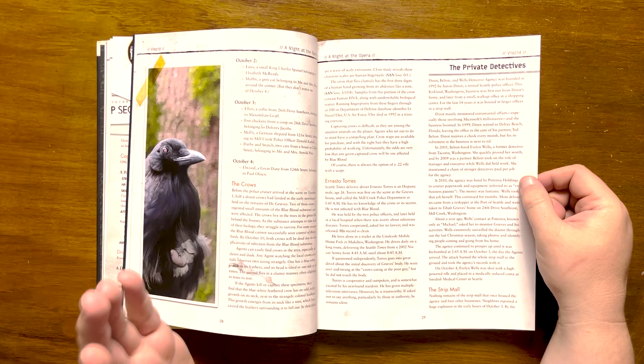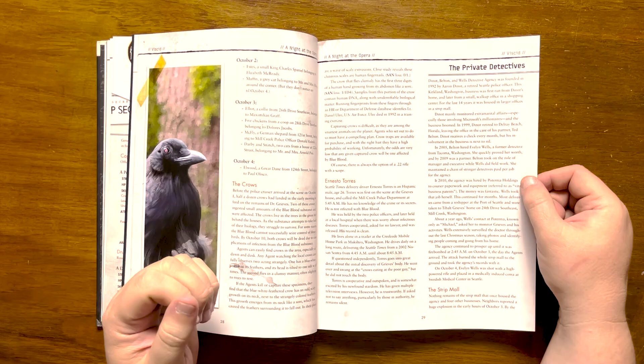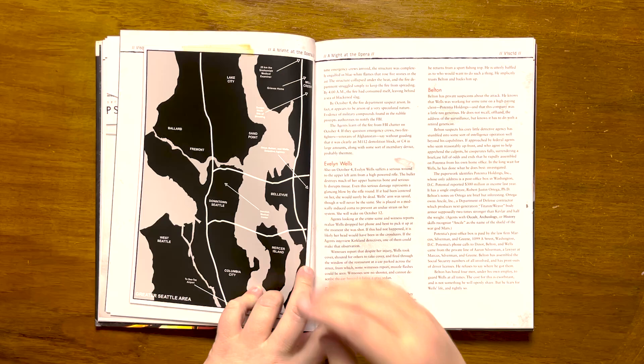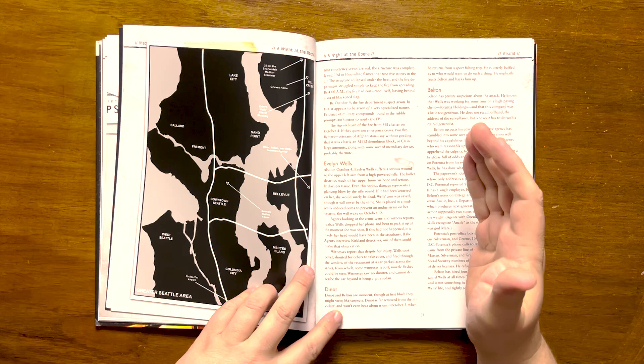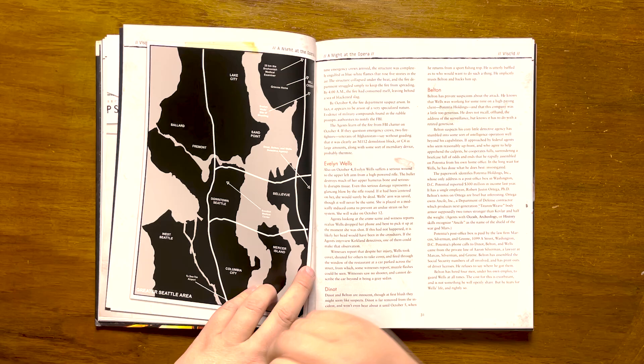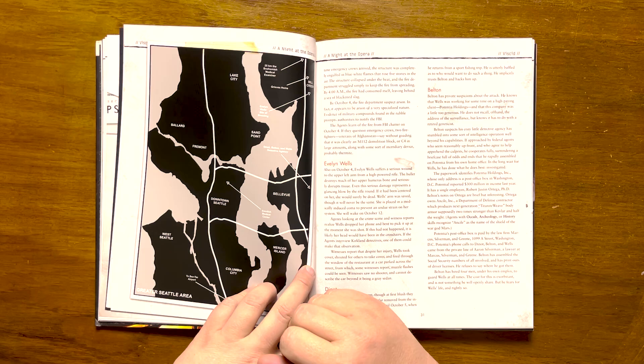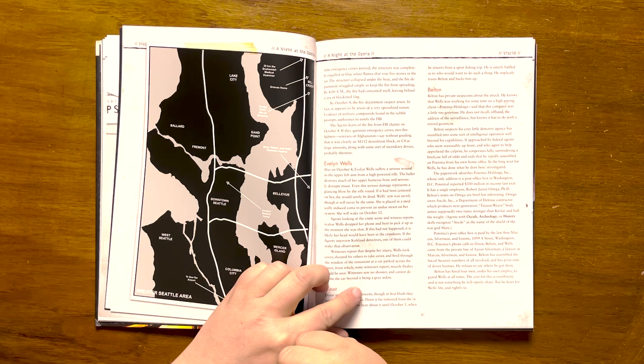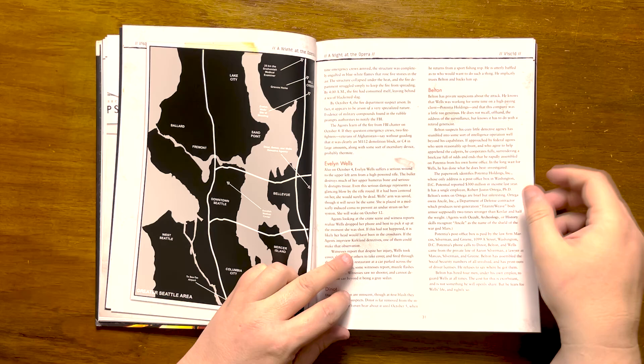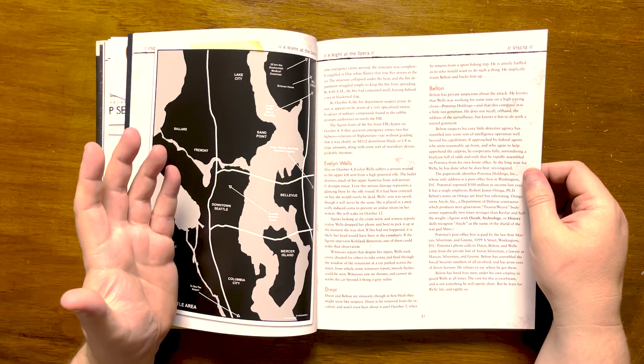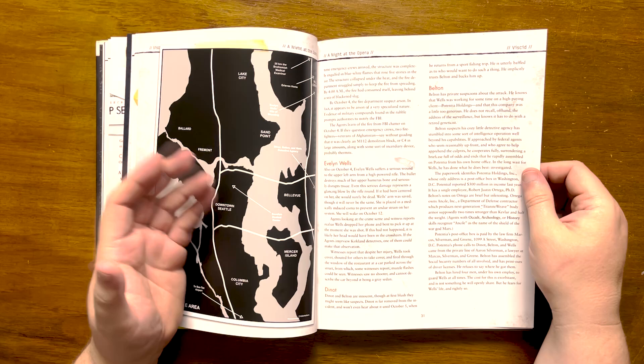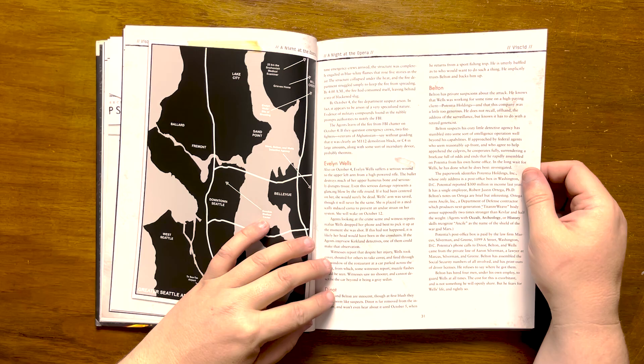Next up is the private detectives, Dino, Belton and Wells. It gives information on the timeline of Wells being hired and also on the subsequent burning down of the offices and strip mall attached to it. Various lines of FBI and fire service chatter will reveal that arson is suspected, probably thermite. Dino was away from the office on a fishing trip, so he's dumbfounded as to why someone would want to do this, and Wells is in the Swedish Medical Center in an induced coma, recovering from a gunshot wound. This leaves Belton. He has private suspicions about the attack, as he knows that Wells was working for a high-paying client, Potentia Holdings. If approached by federal agents who seem legitimate, he will provide them with a briefcase of information he has gleaned. This will link Potentia Holdings, Robert Justin Ortega and Marcus Silverman and Green to events. He also reveals that he has hired four men to keep guard on Wells, as he rightly so fears for her life. Information on their digital records is also given, although they are heavily corrupted for some reason.